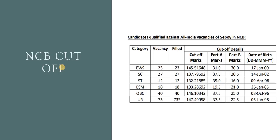Let's look at the cutoff. You can see all-India cutoff in the NCB. EWS is 65, SC is 132, ST is 132, EXR is 103, OBC is 166, UR is 168.